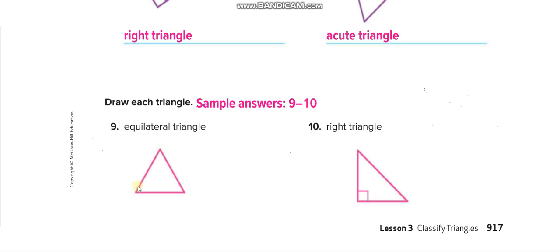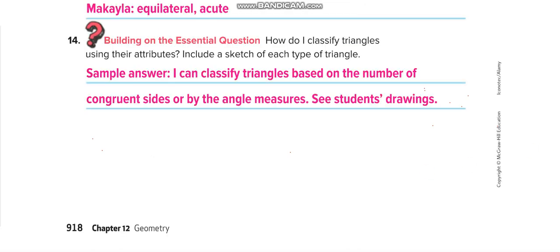All angles here are less than 90, so acute triangle. For this one, they said equilateral triangle, so we draw all sides of the same length. For the next one, they said right triangle, so we draw a triangle with a 90-degree angle.